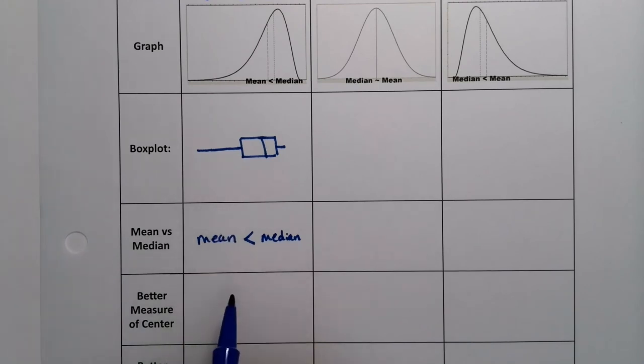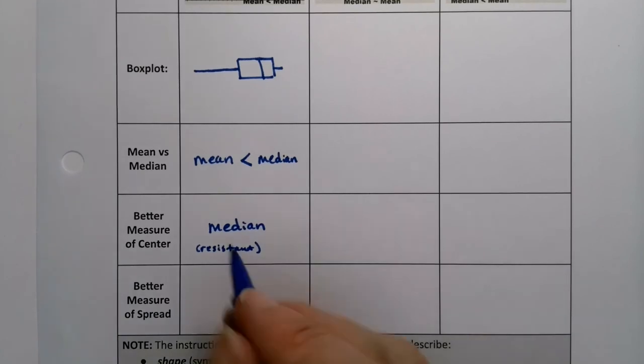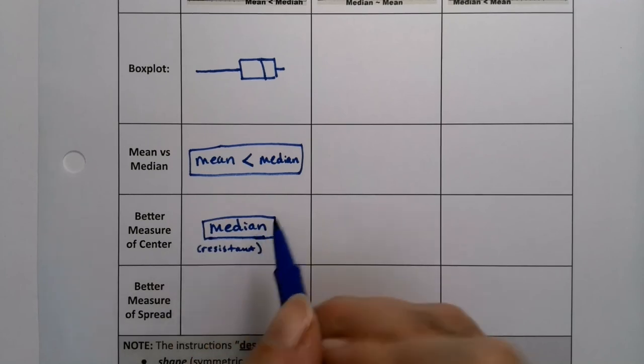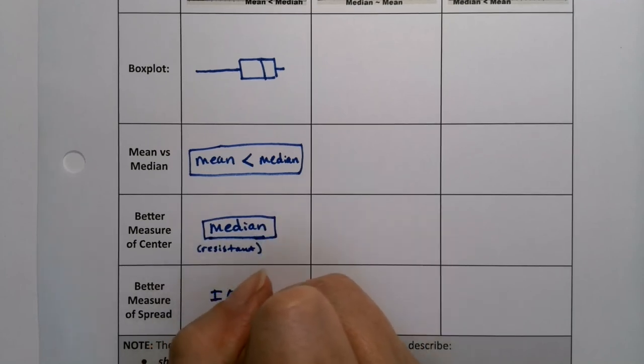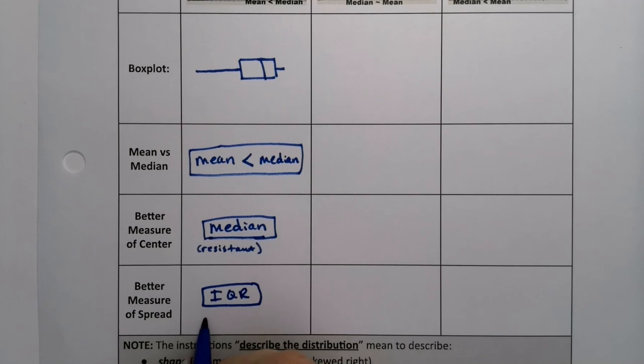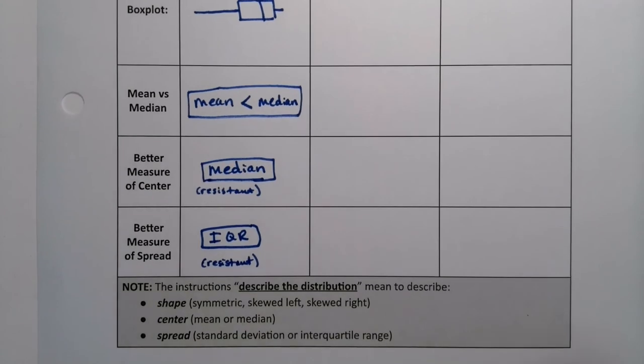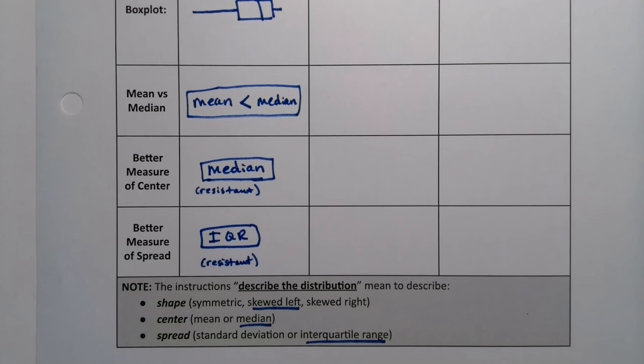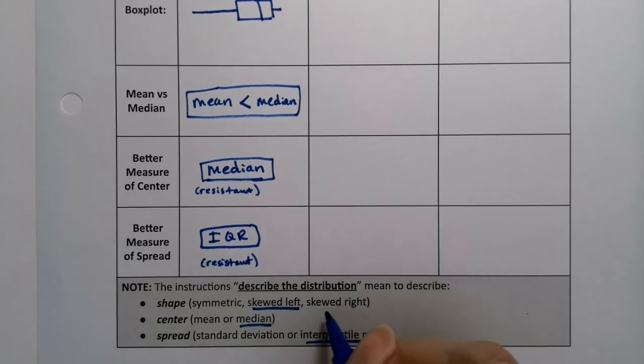If it's skewed left like this is, then you should use the median because the median is resistant to that skewing. And you should also use the IQR. We saw that a couple pages ago, because the IQR is also resistant to skewing. So if your data set is skewed, you want to use the median and the IQR. They go together. And honestly, it's true for skewed right as well.